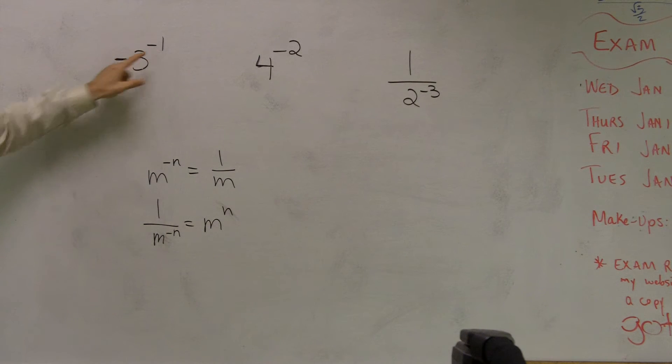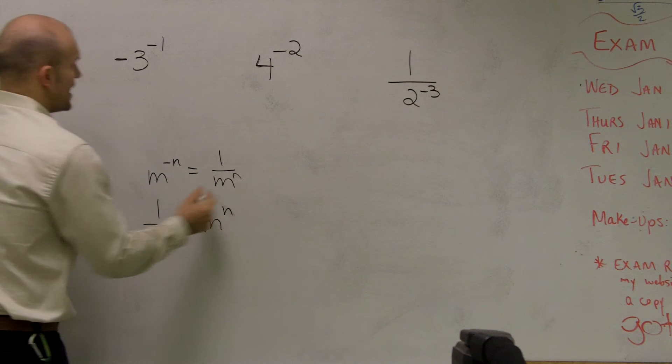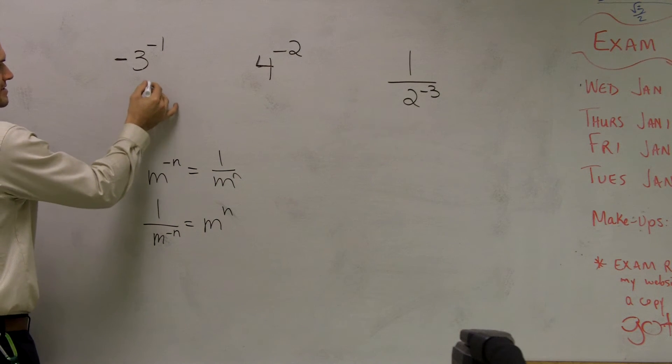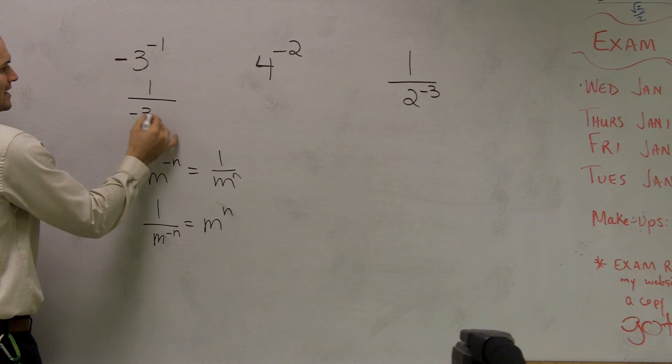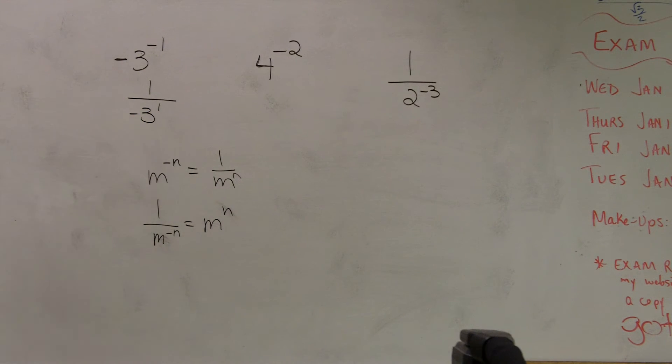It's not negative because of the negative exponent. So if I have negative 3 to the negative 1, to rewrite this as a positive exponent, I have to now put it below my numerator. So now I can rewrite this as 1 divided by negative 3 raised to the first power.